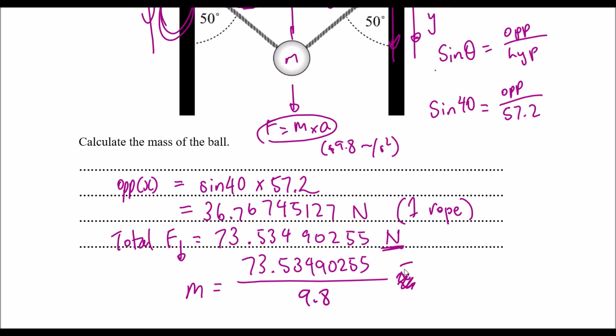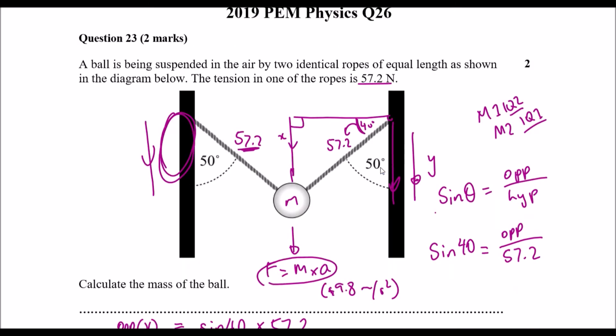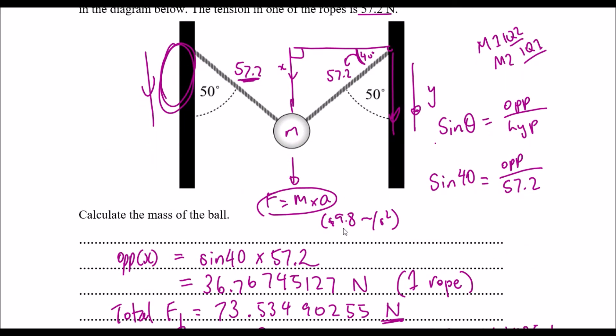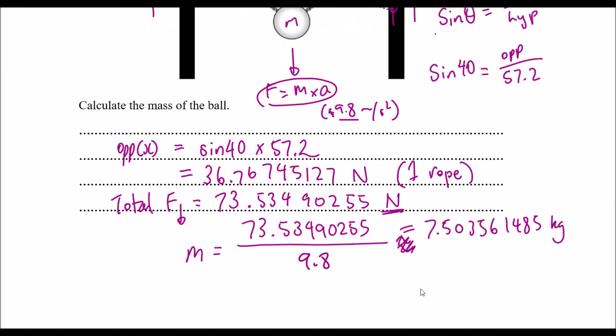Or perhaps let's just write the exact values first and then we'll round it off. So 7.50561485 kg. If we look at the question here, the lowest significant figures we used is 57.2. Although I did plug in 9.8, so on your formula sheet 9.8 is the acceleration of gravity. So that's the lowest significant figure I used in this calculation. So I'm going to round it off to 2 sig figs as well. So it would be 7.5 kg.